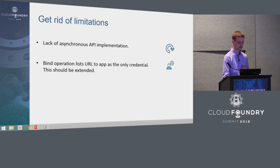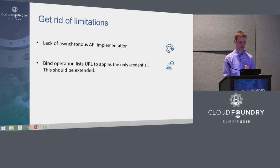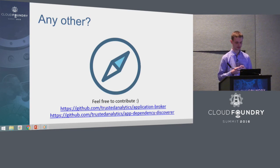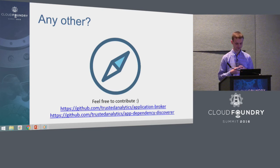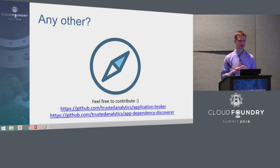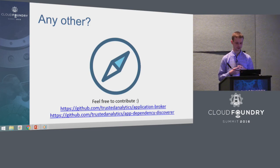The second thing to implement would be extending the list of credentials provided by Application Broker on the binding operation, because currently it just returns the URL of the application served underneath. Application Broker was open-sourced last year, and I'm happy to encourage you to take it and use it. If you discover any limitations, feel free to contribute or place an issue on GitHub. We built Application Broker using the Go language intentionally, because CF CLI is also written in Go, so the Cloud Foundry community will possibly be able to implement features as well.